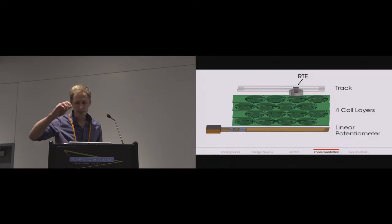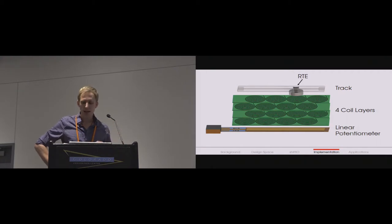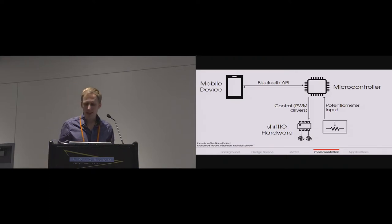Within the device, a mechanical track constrains the motion of the RTE to the linear dimension and prevents the element from detaching if perturbed by a large force. The entire system is driven by an Arduino microcontroller, which communicates via Bluetooth with a host device. Applications can then make high-level API calls. For example, they can request the repositioning of any given element, and the ShiftIO hardware manages the appropriate control.